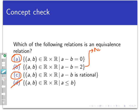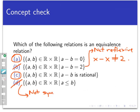Let's deal with the non-equivalence relations first. Relation B is not an equivalence relation because it's not reflexive — if you take a real number x, x is not related to itself because x minus x is not equal to 2, it's equal to 0. This alone disqualifies it, but in fact it also fails both symmetry and transitivity. Relation D satisfies reflexivity and transitivity, but it's not symmetric — for example, 4 and 5 are related, but 5 and 4 are not.